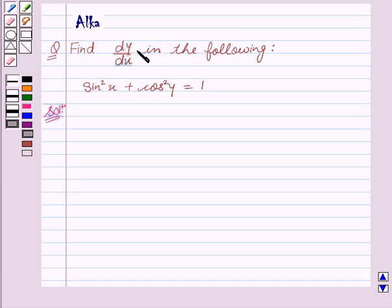I am going to help you find dy by dx in the following: sin square x plus cos square y equal to 1. So let's start with the solution.